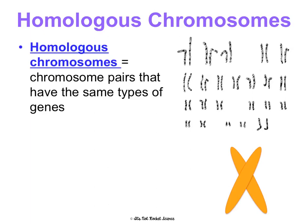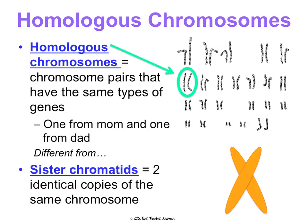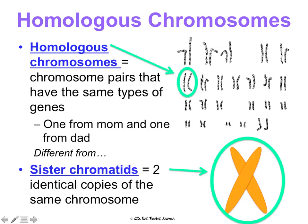Homologous chromosomes are the chromosome pairs that have the same types of genes. You get one from mom and one from dad — 23 homologous chromosome pairs. They have the same genes on them, but they may say something different. So both chromosomes may have a gene for hair color, but dad's may say brown hair and mom's may say blonde hair. That's why we say they're homologous. This is different from sister chromatids, which we talked about in mitosis. Sister chromatids are two identical copies of the same chromosome. When a chromosome is just by itself, that's an individual chromosome. When it's an X shape, it's a sister chromatid — it's been duplicated during the S phase of interphase. Understanding the difference between these is critical for what we're going to be learning about in meiosis.